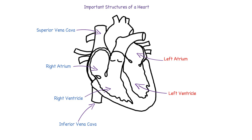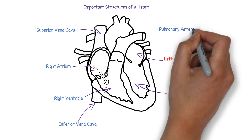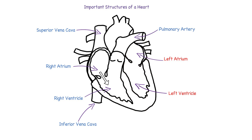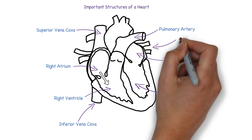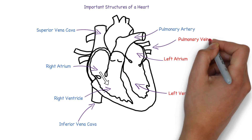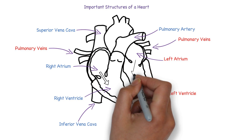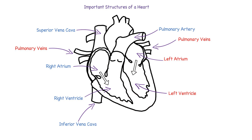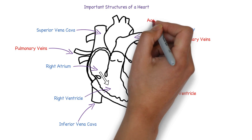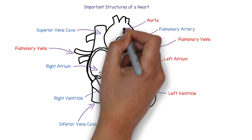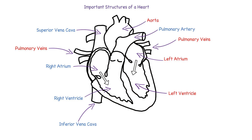Blood then goes to the right ventricle from the right atrium. The right ventricle pumps this blood out to the lungs through the pulmonary artery. Blood from the lungs then goes to the left atrium via the pulmonary veins. From there, blood enters the left ventricle, which pushes it out to the body via the aorta.